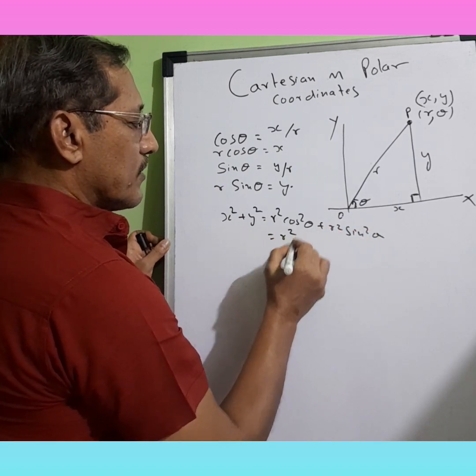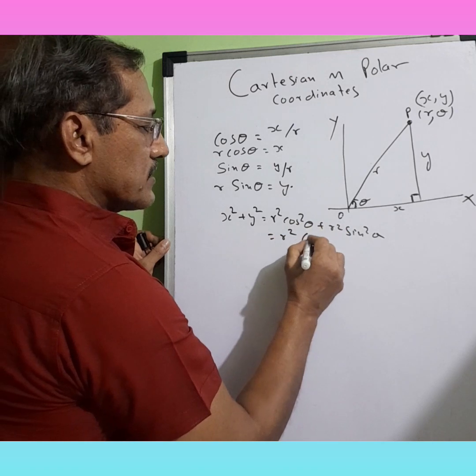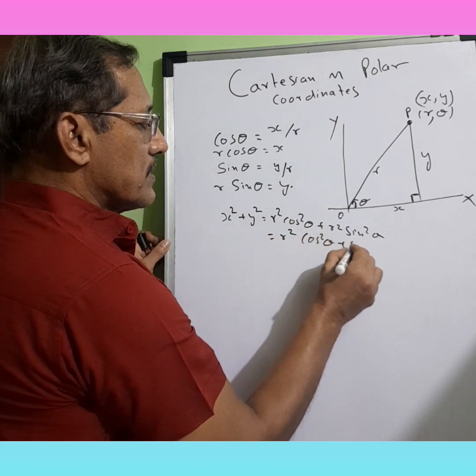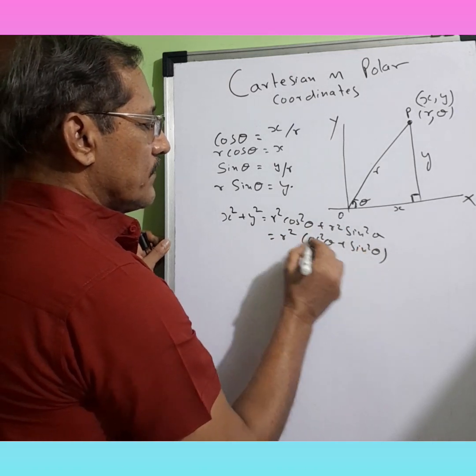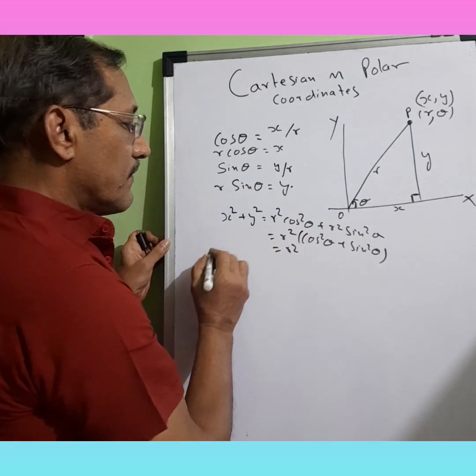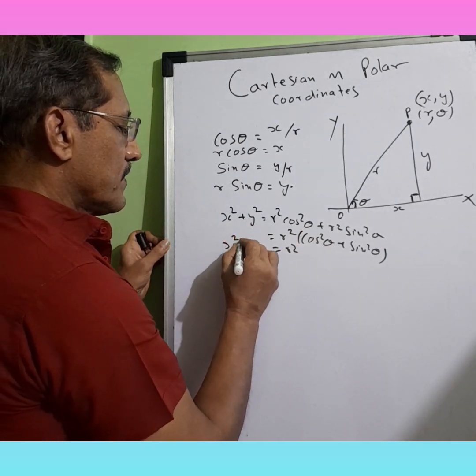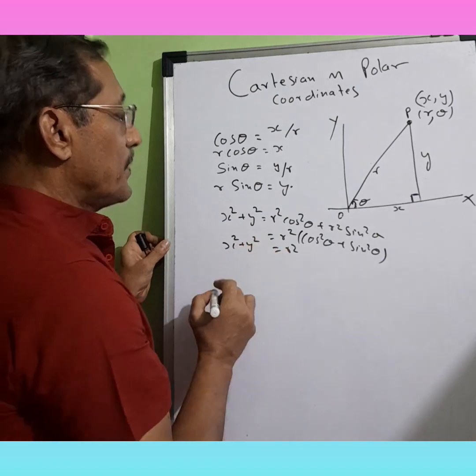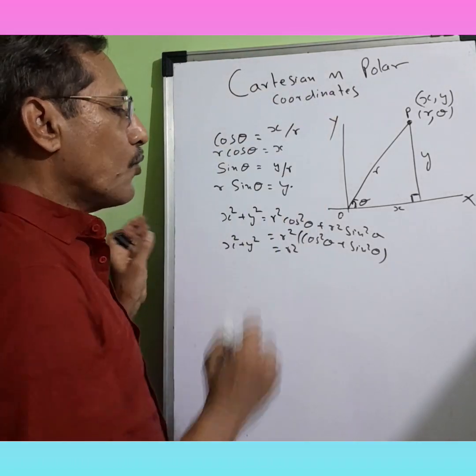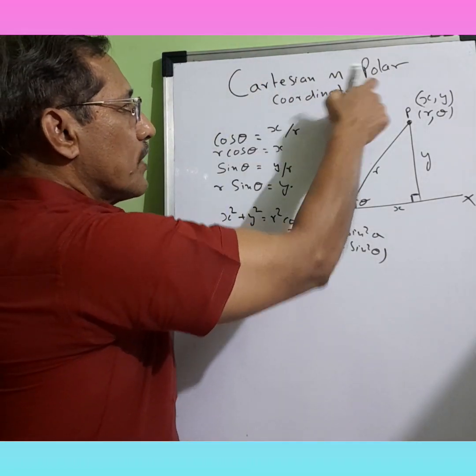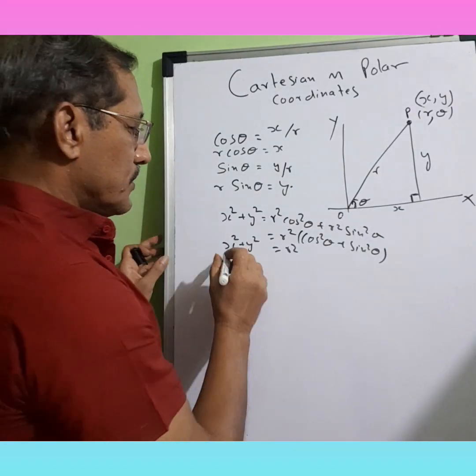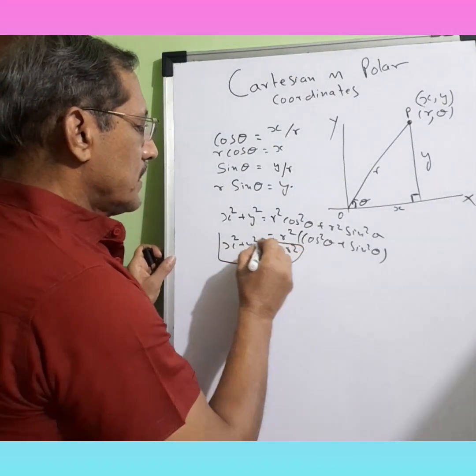R square we can take out as common, and what remains inside is cos square theta plus sin square theta, which is equal to 1, equals R square. So we develop yet another relationship between Cartesian and polar coordinates.